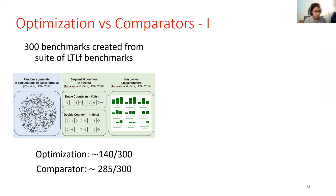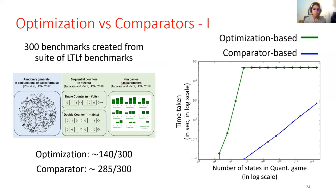In fact, the benefits are also shown in empirical evaluations. Comparator-based satisficing solves many more benchmarks than optimization-based method. And so is true for the scalability trends. Here we are plotting number of states in the quantitative game against amount of time taken, both in log scale. And you can clearly see both efficiency and scalability of the comparator-based method.